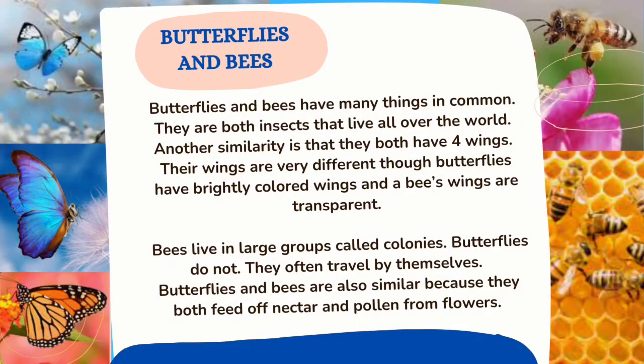Let us try an example text. The selection is about butterflies and bees. Butterflies and bees have many things in common. They are both insects that live all over the world. Another similarity is that they both have four wings. Their wings are very different, though — butterflies have brightly colored wings and a bee's wings are transparent. Bees live in large groups called colonies, while butterflies do not; they often travel by themselves. Butterflies and bees are also similar because they both feed off nectar and pollen from flowers.